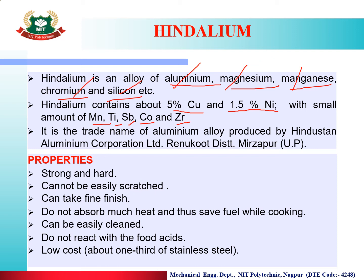The name 'Hindalium' was given by the Hindustan Aluminium Corporation Limited, located in Renukoot district, Mirzapur, UP, where it was first produced.